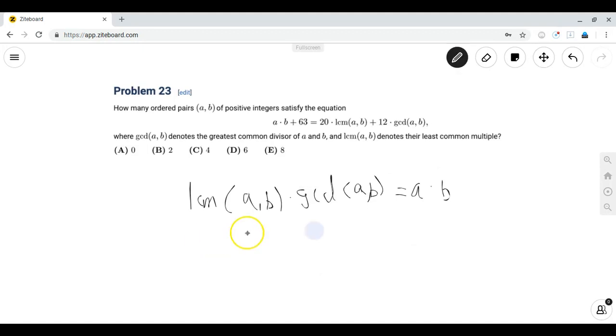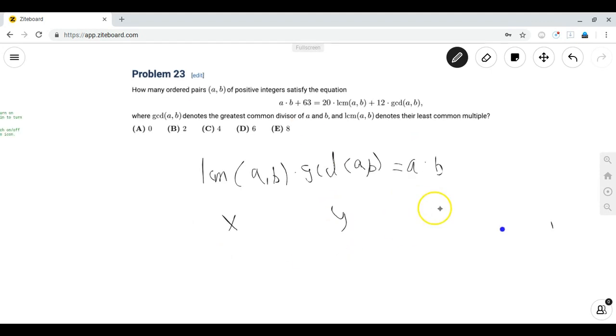So using this fact, we can just let LCM AB be x and GCD AB be y to shorten what we have. Then we have xy plus 63 is equal to 20x plus 12y.